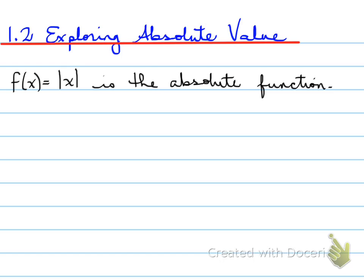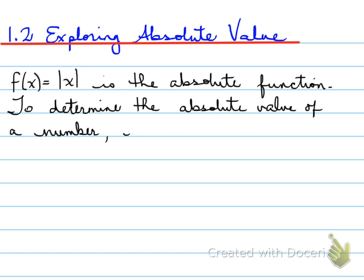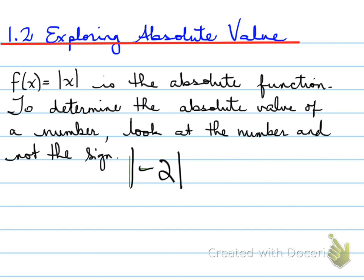Now this is known as the absolute value function because it's in function notation. To determine the absolute value of a number, you look at the number and not the sign. For example, if I want you to do absolute of negative two, that means the answer is just going to equal two. Knowing that, let's keep moving.